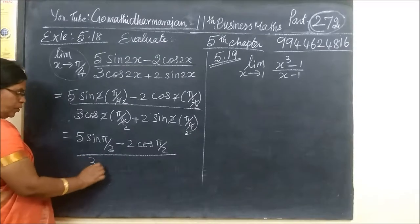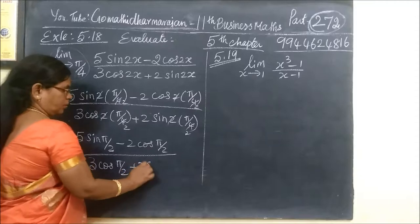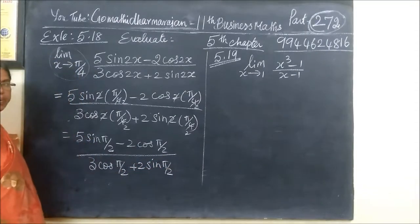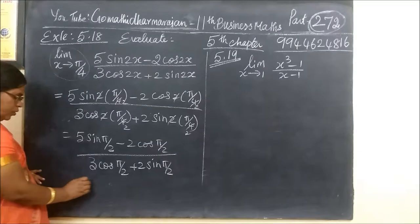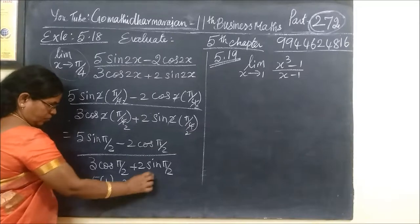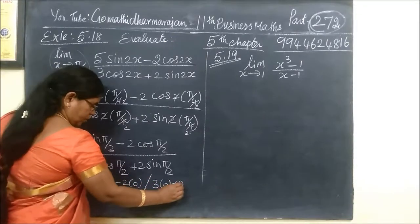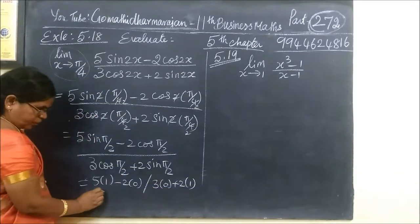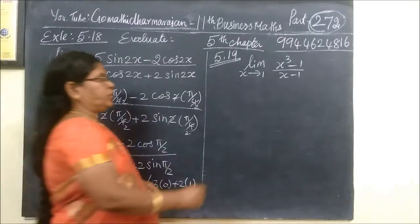So that gives 5·sin(5π/2) minus 2·cos(5π/2), then 3·cos(5π/2) plus 2·sin(5π/2). We know sin(5π/2) is 1 and cos(5π/2) is 0. So that is 5·(1) minus 0, plus 3·(0) plus 2·(1). So the answer is 5/2.